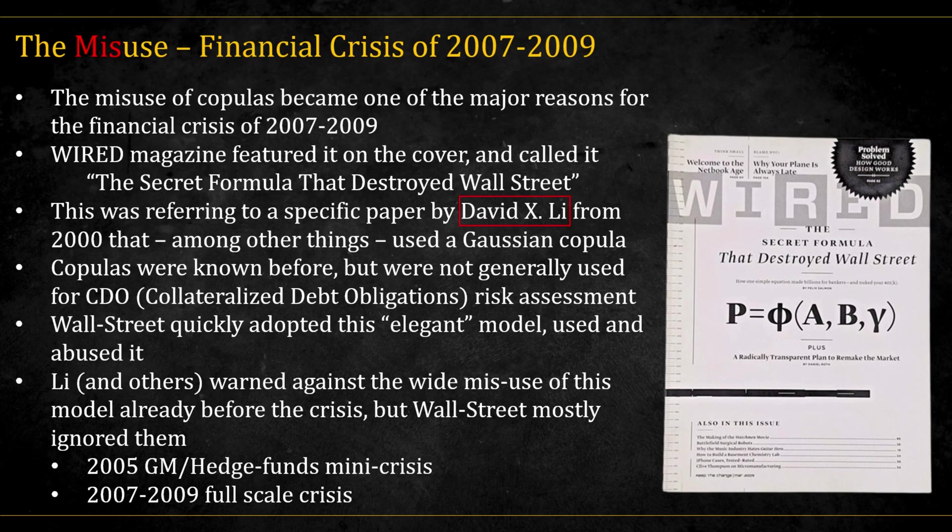This is referring to a specific formula by one David Li, which used, among other things, also a Gaussian copula. Now the copula wasn't the only component, but it was part of it. And specifically the Gaussian copula that assumes constant correlation.